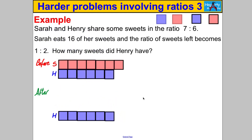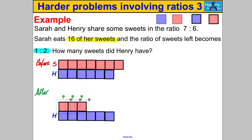Afterwards, we can preserve Henry's six parts — he has not eaten any sweets. However, Sarah has eaten 16. We don't exactly know how many parts that's worth, but we do know the ratio has now become 1 to 2 between Sarah and Henry. That means Henry has double Sarah's parts. So if Henry has six parts, the only logical conclusion is that Sarah must have three parts.